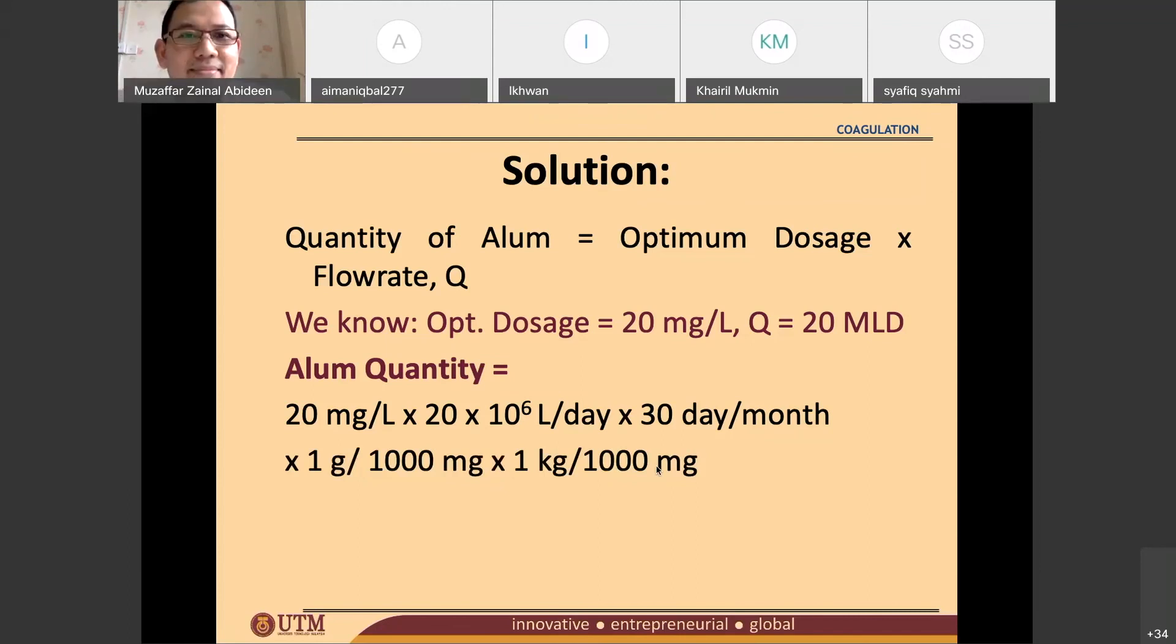Has anyone got the answer? 12,000. Okay, 12,000, I think so. Yeah, 12,000 kg per month. Okay, settle the first part.